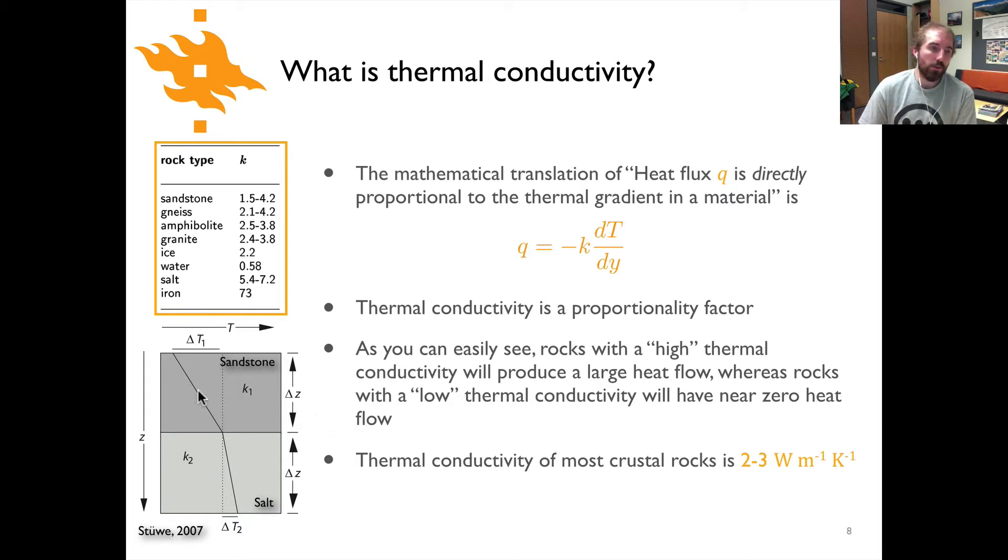And then if you look down here in this schematic cartoon of some layers of rock, you can see here a plot of a geotherm. So we have temperature along the horizontal axis, depth along the vertical axis, and this line then would represent temperature in the earth across some thickness of sandstone and then transitioning to a salt layer here.